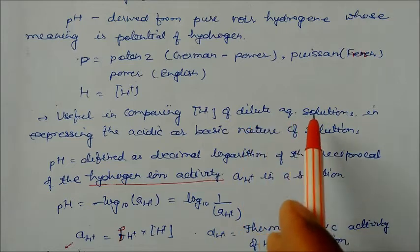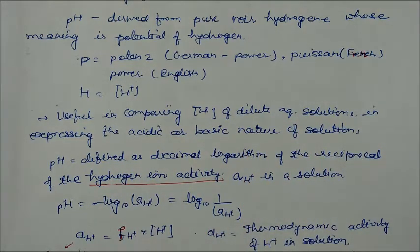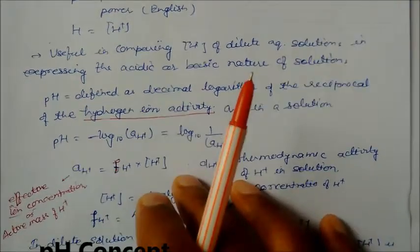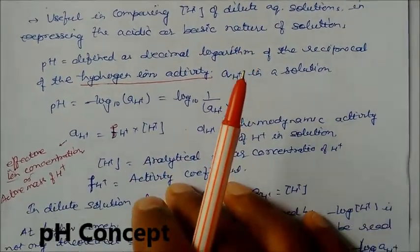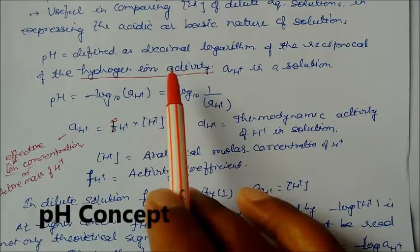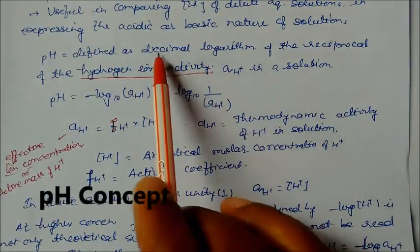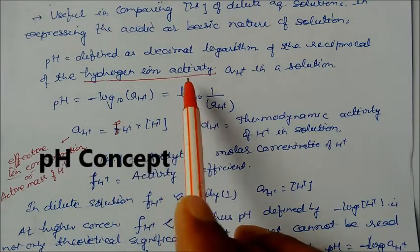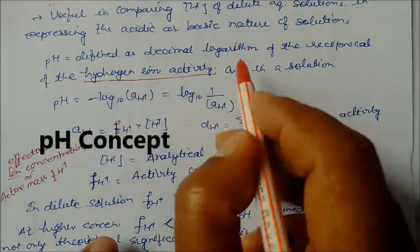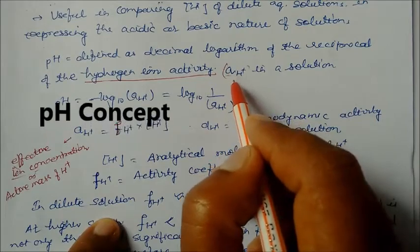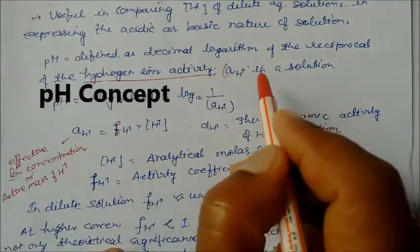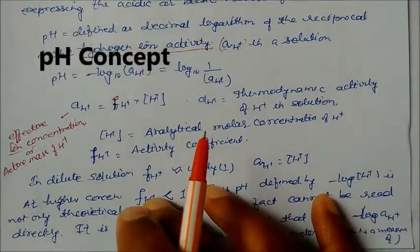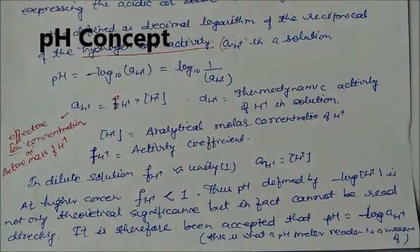pH is useful in comparing the concentration of dilute aqueous solutions, expressing the acidic or basic nature of solution. So we can define pH. It is defined as the decimal logarithm of the reciprocal of hydrogen ion activity.